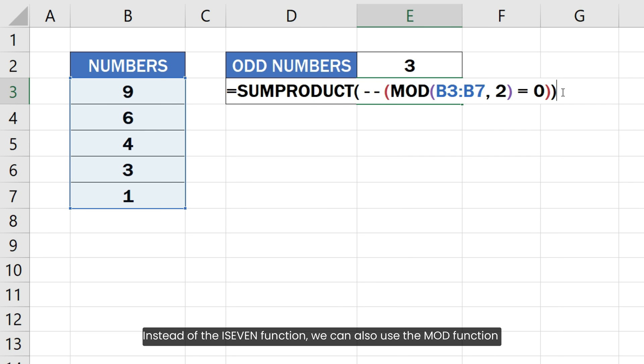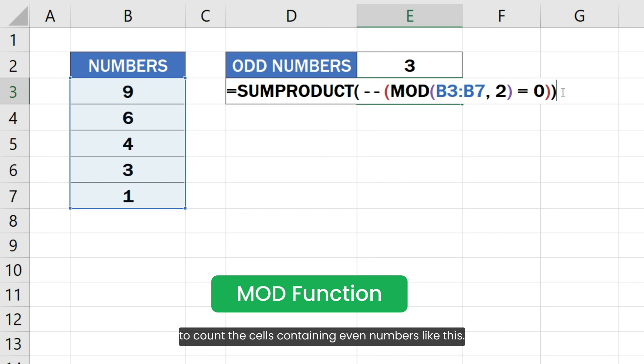Instead of the ISEVEN function, we can also use the MOD function to count the cells containing even numbers like this.